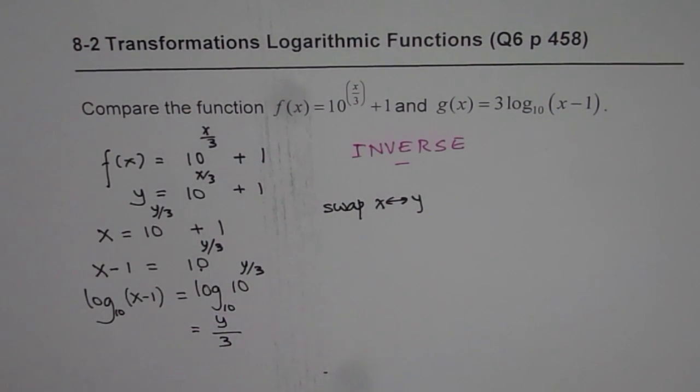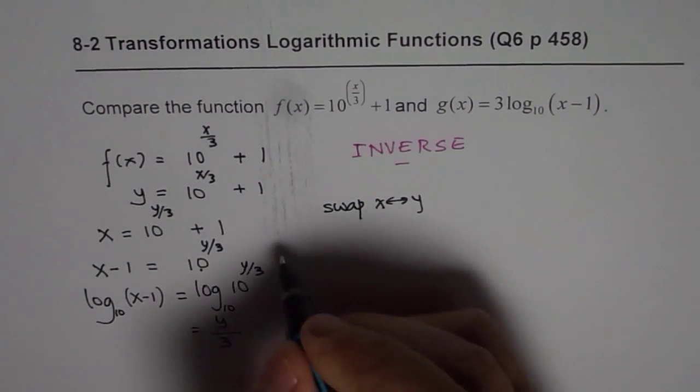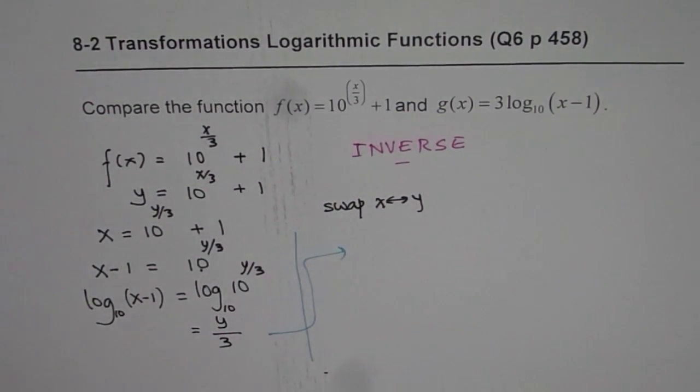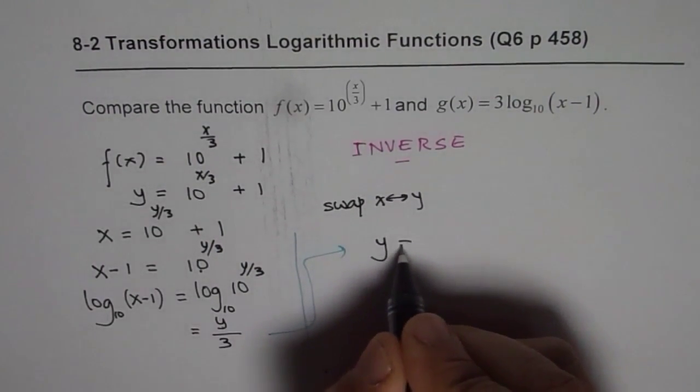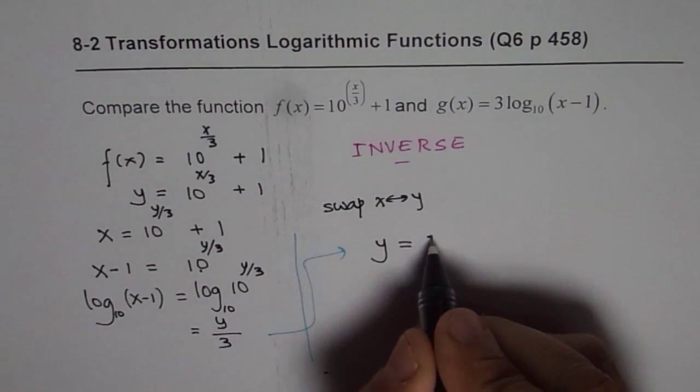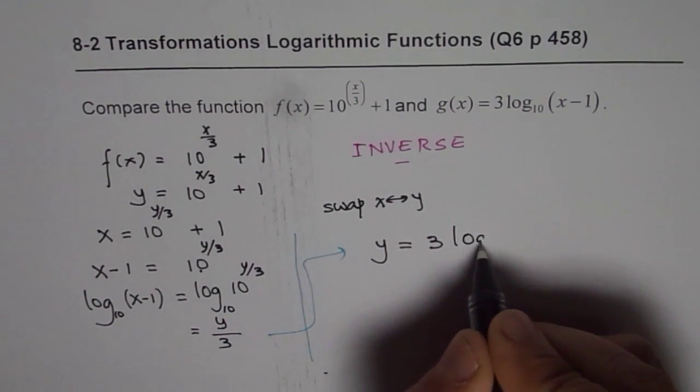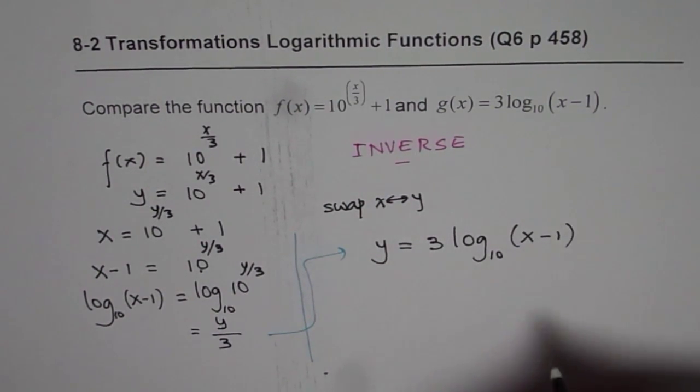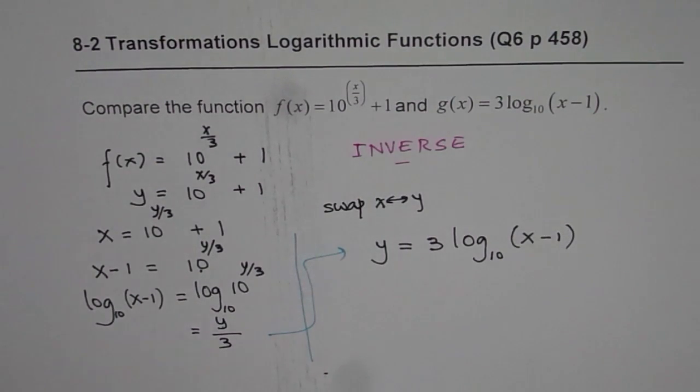From here, we can write down our function. What is y equal to? So we get y = 3log₁₀(x-1), which is exactly same. Do you see that?